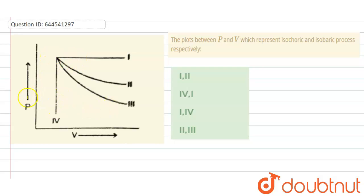this graph is given. This graph is plotted between pressure and volume, and here one, two, three, and four - four curves are drawn. The plots between P and V which represent isochoric and isobaric processes. So first of all